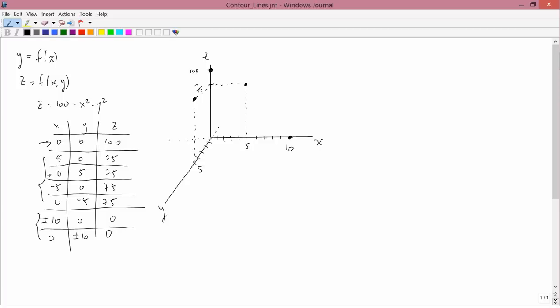And then the last line with positive numbers, x is 0, y is 10, z is 0. So 6, 7, 8, 9, 10 units in the y-direction, no units in the x-direction, so no units left or right, and 0 units in the z-direction.